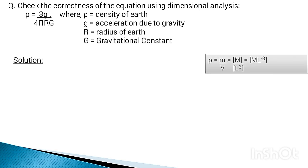We have ρ, which is density, equal to mass divided by volume. The dimension of mass is M and volume is L³. So the dimension of ρ becomes ML⁻³.